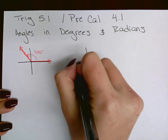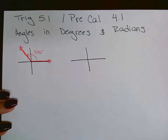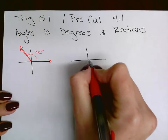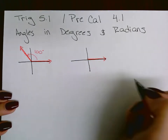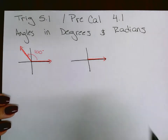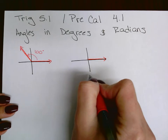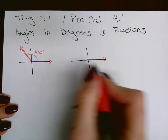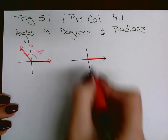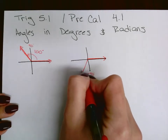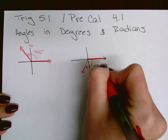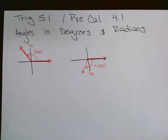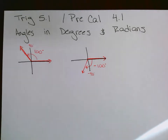For negative degrees, say negative 100 degrees, I still start on the initial side on the right, but instead of going counterclockwise I go downward. Negative 90 is straight down, and going a little past it gives the terminal side for negative 100 degrees. So: counterclockwise for a positive angle, clockwise or downward for a negative angle.